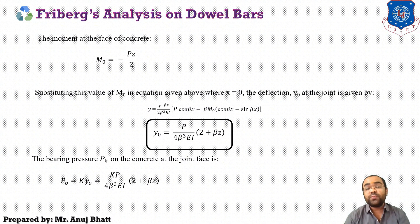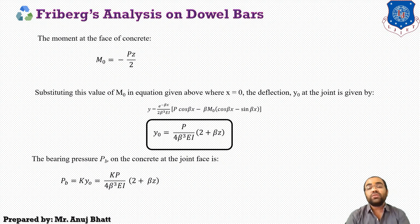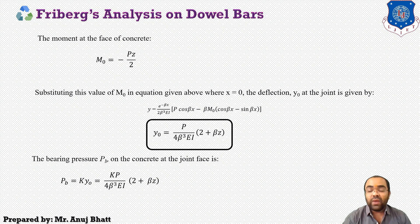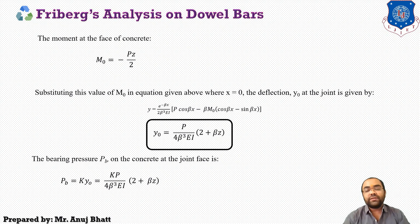Freiburg used the expression K0 times B to replace the modulus of foundation from Timoshenko's model. Freiburg's equation was developed using a semi-infinite dowel length; dowel bars have a finite length so this equation would not strictly apply to dowel bars used in practice today. However, Freiburg's equation can be used with little to no error if the value of capital L — the length of the dowel bar embedded in concrete — is greater than 2.